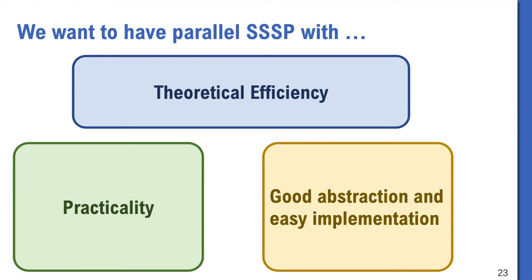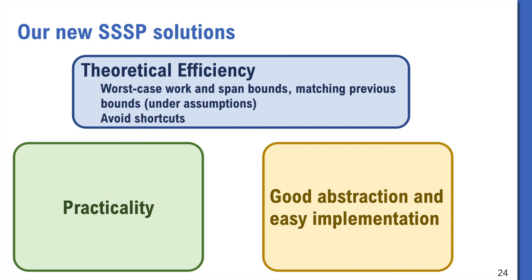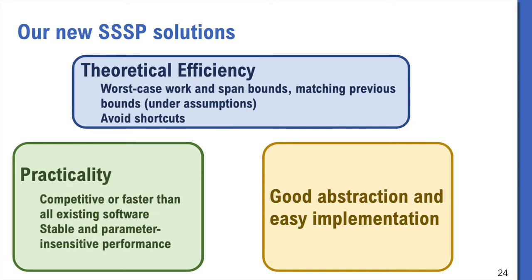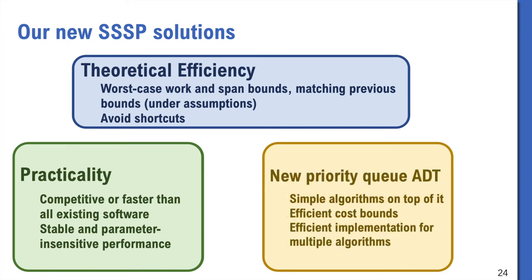Ideally, we want to achieve a combination of all of them. Theoretically, we want some worst-case bounds that match or close to theoretical bounds. Especially we want to avoid short-cuts, but still have some interesting bounds. Practically, we want to make it competitive or faster than existing systems, and have parameter-insensitive performance. Also, we want to design a good abstraction for the priority queue such that it makes both the analysis and implementation simple. That sounds pretty ambitious, but we will show that very simple ideas give a very good solution.